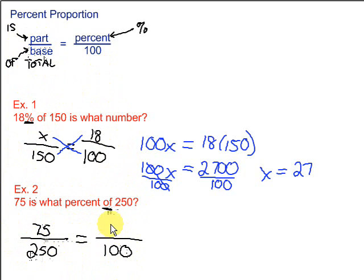Then our final spot, we'll just put a variable in there. Whatever variable you like to use. I like x. Then we're going to take our cross products. So we have 75 times 100 and 250 times x. So we take those, 250x equals 75 times 100.